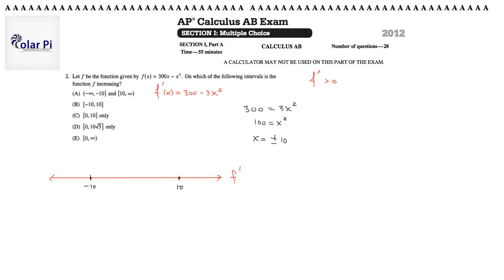Now, we know that we only need to test a single value into f prime in each of these three intervals. So in the interval to the left of negative 10, why don't we use negative 11? That is, let's find out what f prime of negative 11 is. Well, this would mean, since f prime is that fella there, 300 minus 3 times negative 11 squared. That'd say 300 minus 3 times 121.